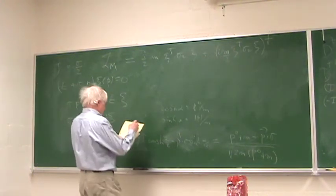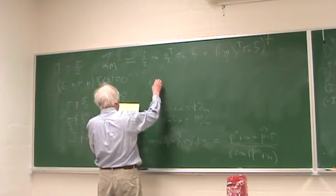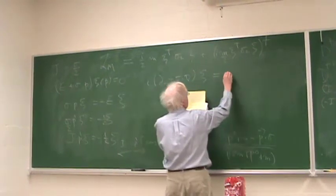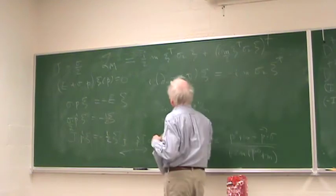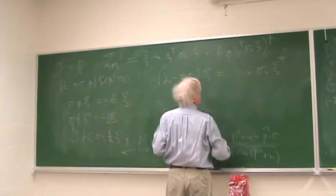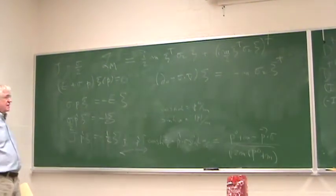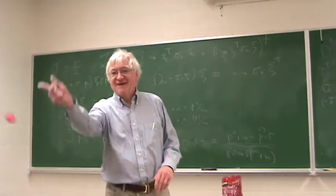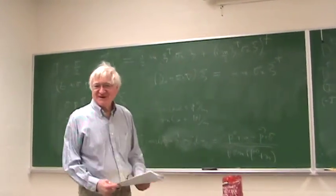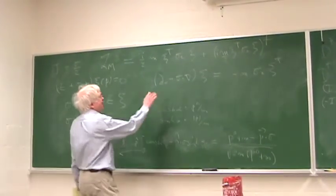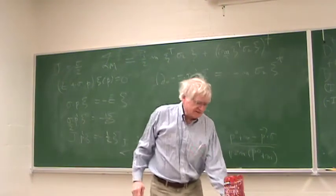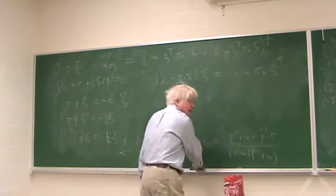The field equation then would be: i d0 minus sigma dot grad, C would now equal minus i M sigma_2 zeta-star. So if we cancel these i's, it looks like this. You see it's a peculiar equation. Where did it come from — the mass action density? Well, first of all, I have to show you why this is invariant — I didn't show you that last time. Let's see why this is invariant. That's the important thing. The Lorentz transformation is basically E to the Z dot sigma.